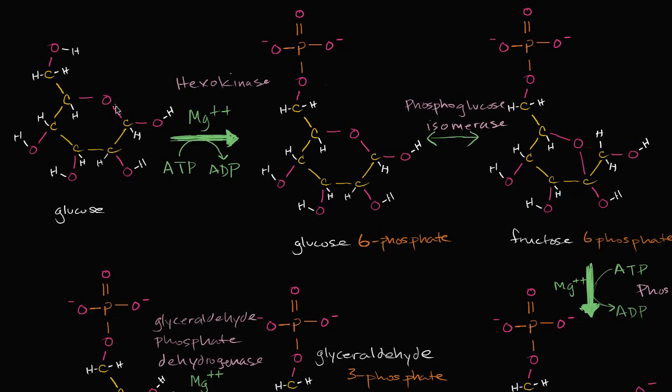So over here, this is a glucose molecule over here. You see one, two, three, four, five, six carbons. And then the first step is it gets phosphorylated. And we have a whole video on the phosphorylation of glucose. And all of these steps are facilitated with enzymes. The phosphorylation is facilitated with the hexokinase.